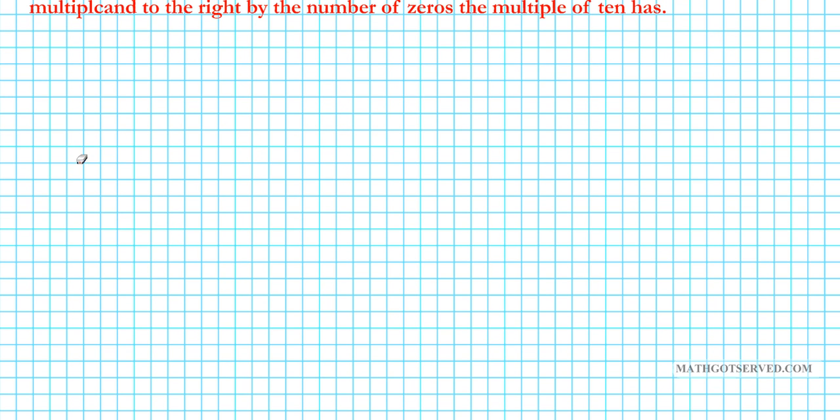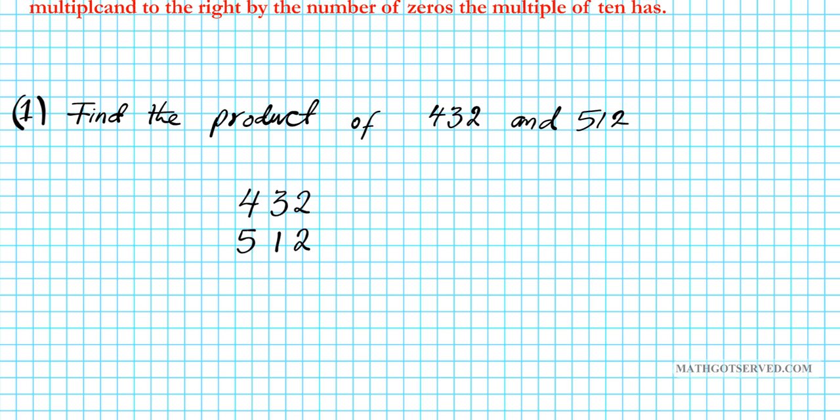Now let's take a look at number one. What if you were to find a product of 432 and 512? So this is the multiplicand, this is the multiplier, and we're going to multiply them together to get the product. 432 and 512. So just put them on top of one another. You don't have to align decimal points.